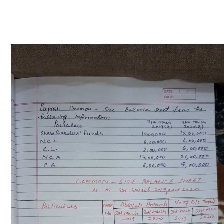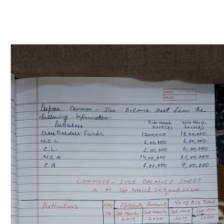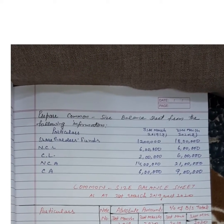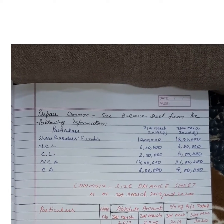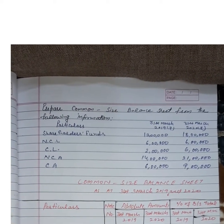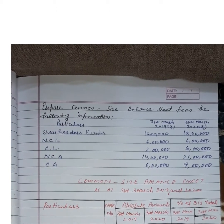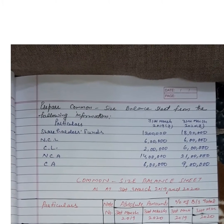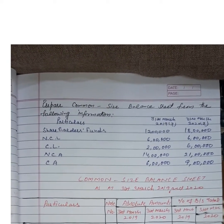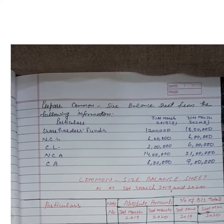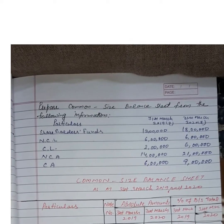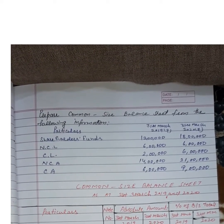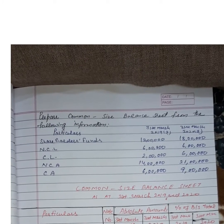Common size statements are accounting statements expressed in percentage of some base rather than rupees. Rupees को किसी एक particular आधार पर percentage में convert करती है, present करती है, जिससे दिये गए data को analyze करना आसान बनाती है और Comparable बनाती है।